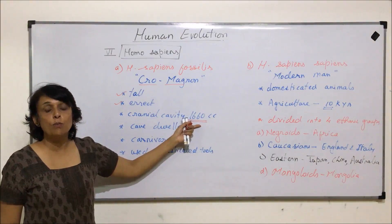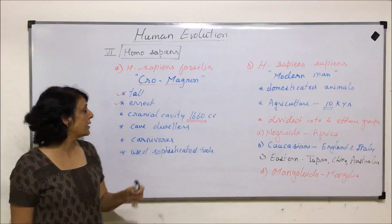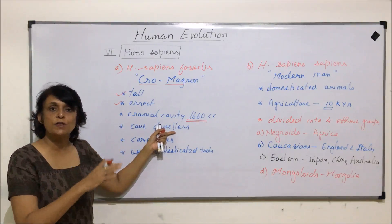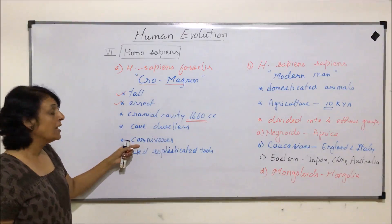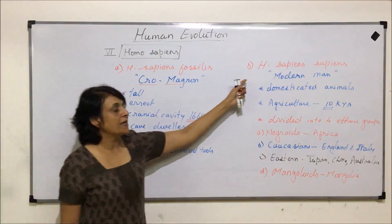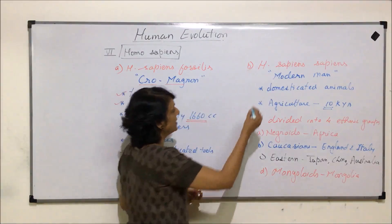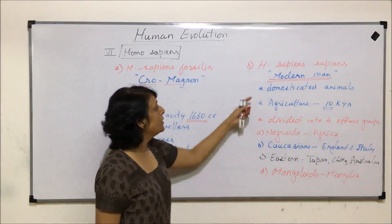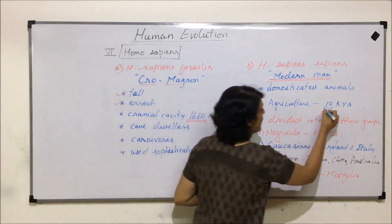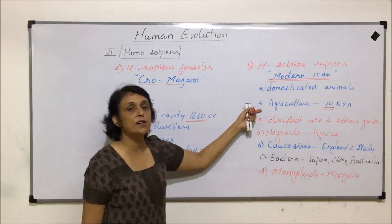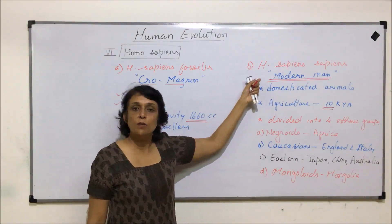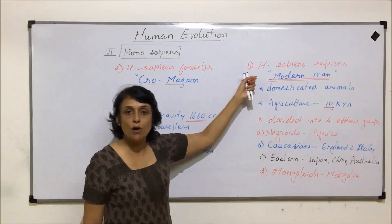Cromagnon were cave dwellers, and paintings or impressions made on cave walls have been found. They were carnivores and used sophisticated tools to hunt animals. Present-day human beings are classified as Homo sapiens sapiens, commonly called modern man. They domesticated animals and are believed to have started agriculture around 10,000 years ago.